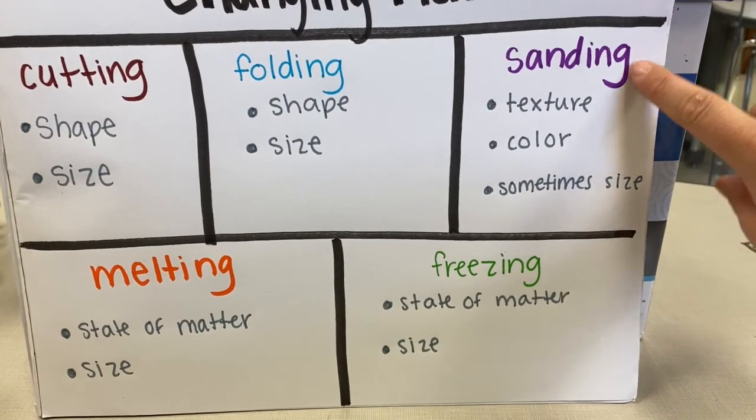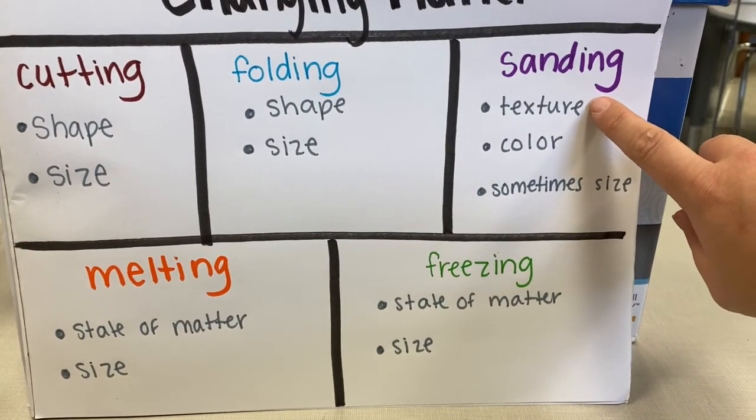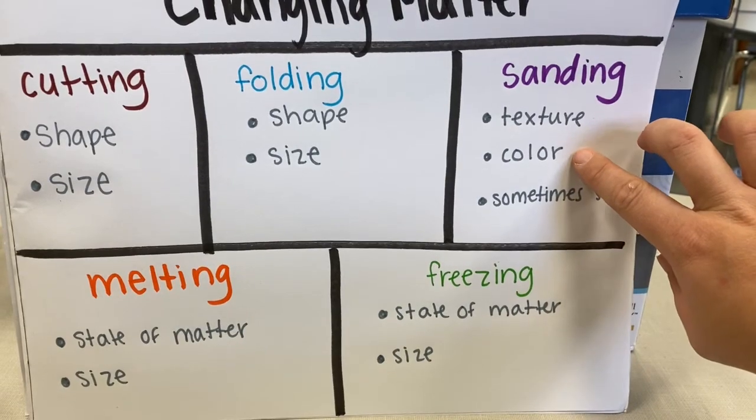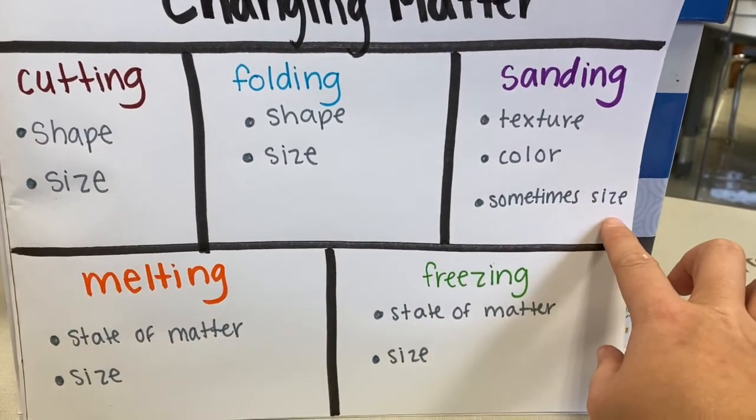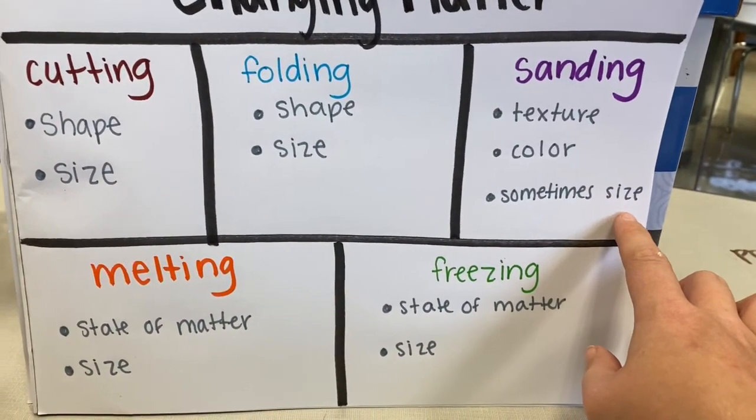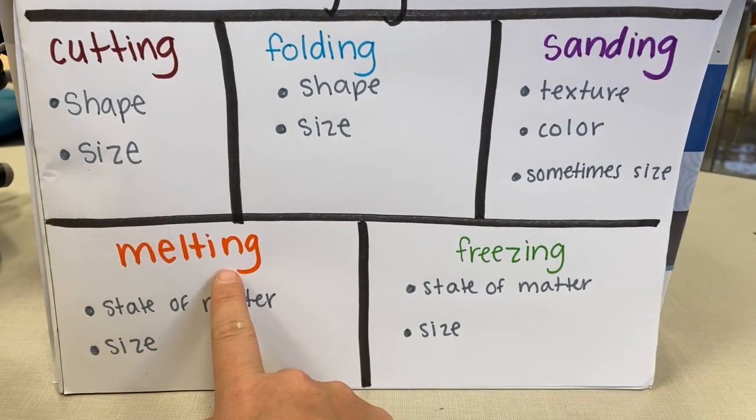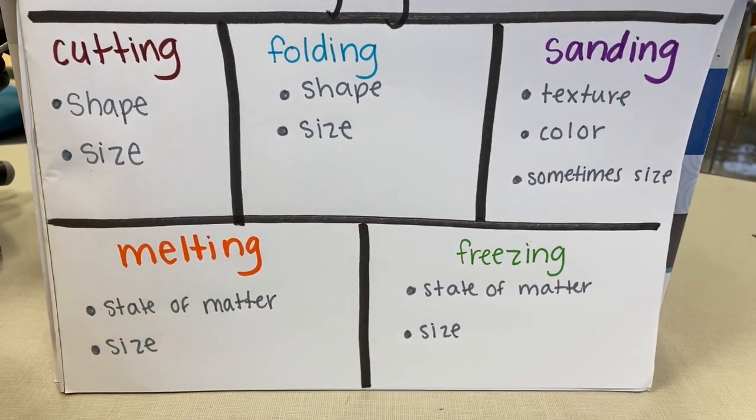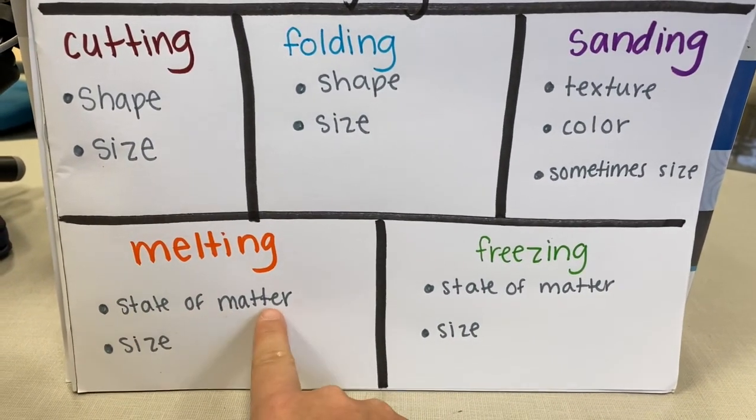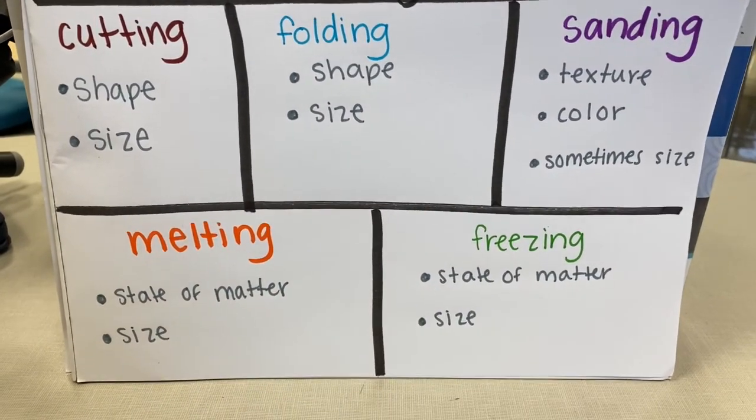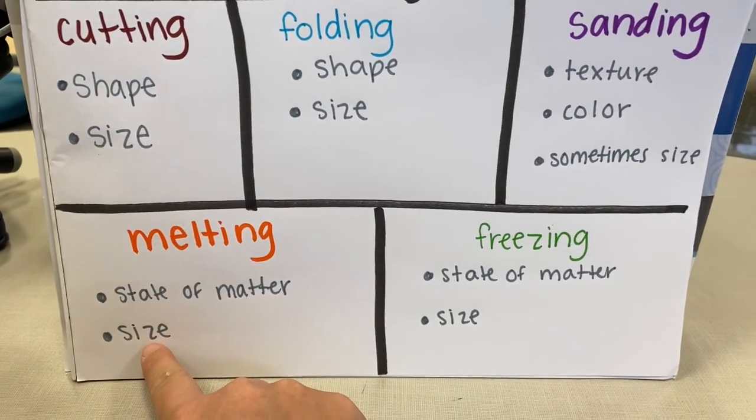Sanding an object with sandpaper changes its texture to make it smoother. It can change its color, and sometimes it can change its size by making it smaller. Melting matter by adding heat changes its state of matter from a solid to a liquid, and it changes its size.